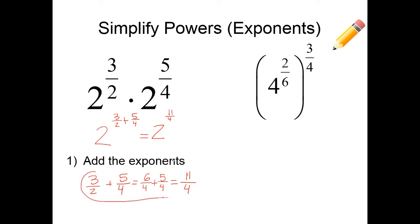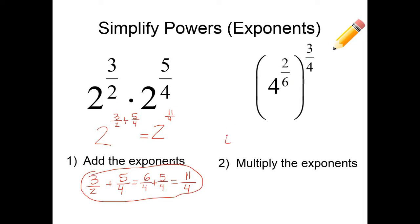I'm just showing that side note — you do not need to show it when you're working on homework, because I'm expecting a lot of you are going to use your calculator. For number 2, you're going to multiply the exponents just like last time: 4 to the 2/6 times 3/4. Multiplying those gives 2 times 3 equals 6, over 6 times 4 equals 24, so 6/24. A 6 goes into both top and bottom, giving 1/4. So I'm going to have 4 to the 1/4 power. Always be sure to simplify your exponents when possible.